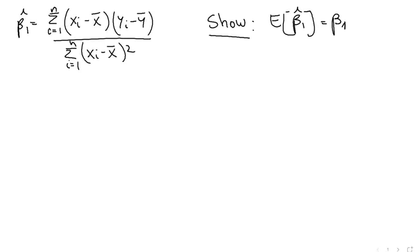In this video, we're going to show that the OLS estimator for β₁ is unbiased, which means that when we take its expected value, that is equal to the true value of the parameter.